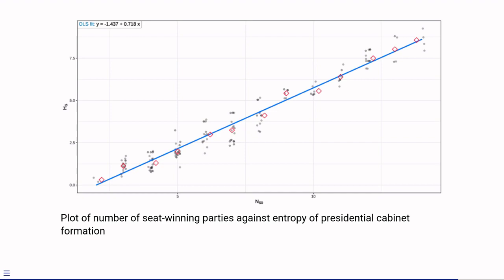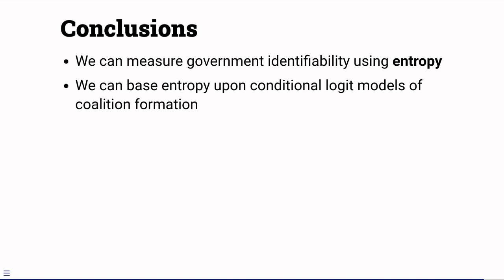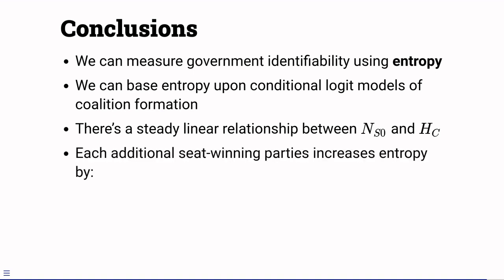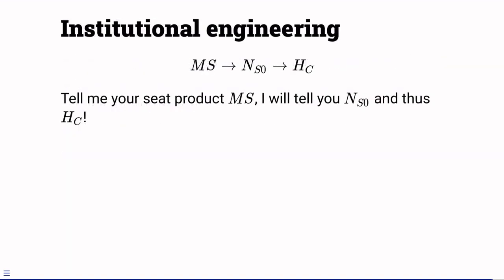So in this presentation, I've argued that we can measure government identifiability using entropy, which in turn is based on predictions from models of coalition formation. And that when we do this, there's a steady linear relationship between entropy and the number of seat winning parties. This therefore connects a normatively relevant property of party systems to the seat product model. If you tell me how big your assembly is and what your average district magnitude is, I can tell you the expected number of seat winning parties and with that how complex your government formation is likely to be. And that is, I would suggest, an important tool for institutional designers.